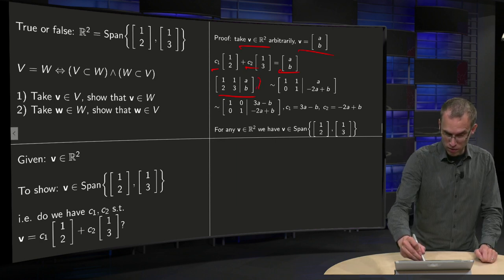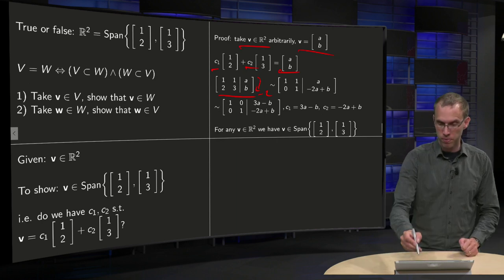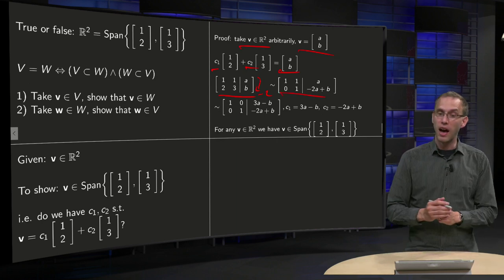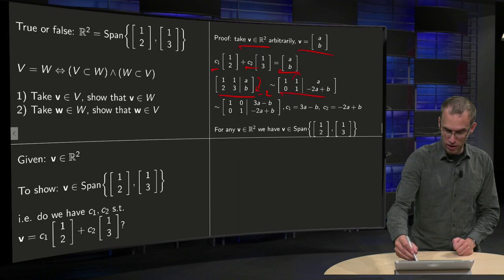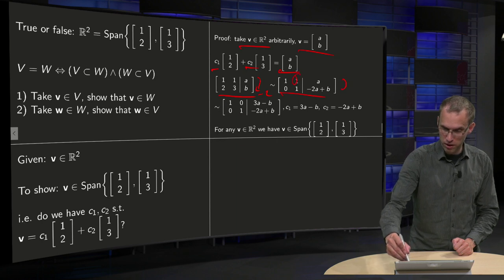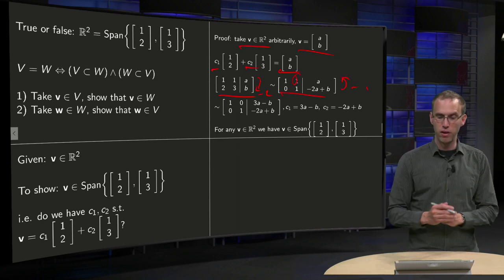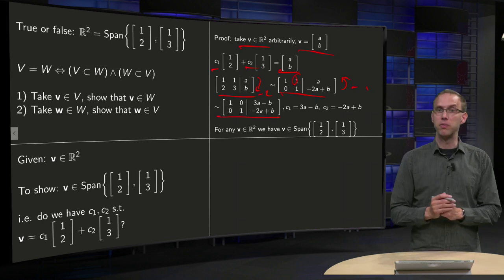Subtract the first row twice from the second, and we are over here. And then we can get a zero over here by subtracting this row once over there. And then we have the following augmented matrix.